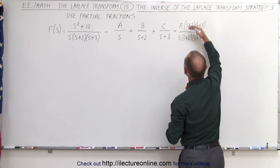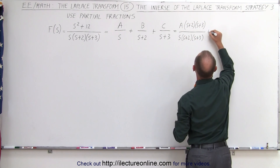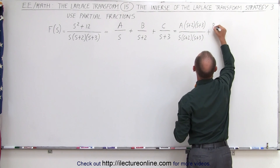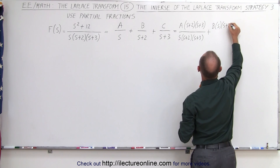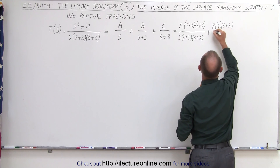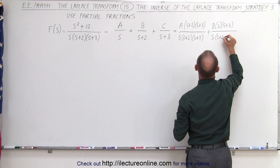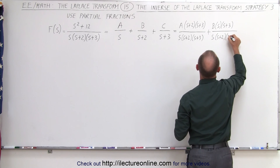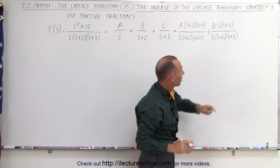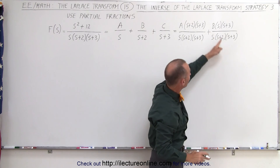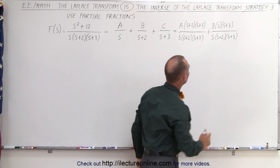Notice when we cancel these out we get back what we started with. Plus b times s times s plus 3 divided by s times s plus 2 times s plus 3. And again when you cancel out the s plus 3 and the s, you get b over s plus 2.